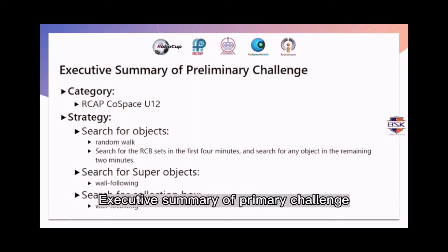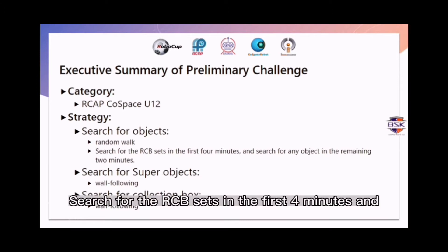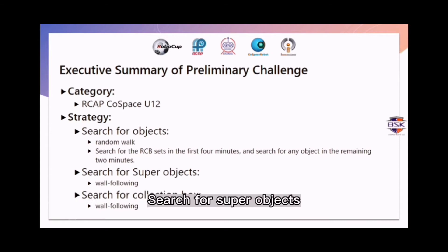Executive Summary of Primary Challenge Category: RCAP CoSpace Under-12 Strategy. Search for objects: Run the block. Search for the RGB sets in the first four minutes and search for any objects in the remaining two minutes. Search for super objects: wall following. Search for collection box: wall following.